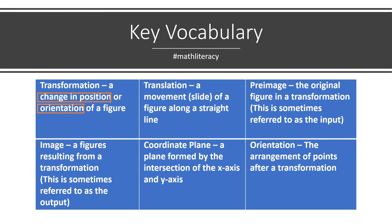We're going to specifically look at how something moves through a translation — that is a movement, which is a slide of a figure along a straight line. Our pre-image is the original figure in the transformation. It's sometimes referred to as our input — our original, meaning our first figure before we perform a change to it.